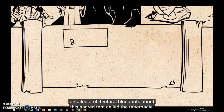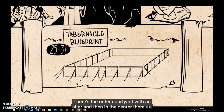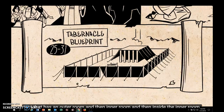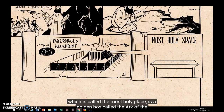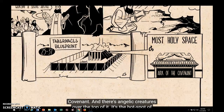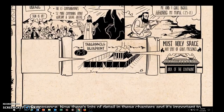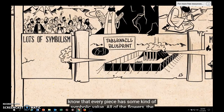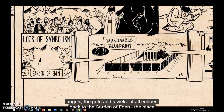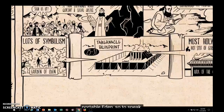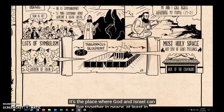What follows are seven chapters of detailed architectural blueprints about a sacred tent called the tabernacle. There's an outer courtyard with an altar, and in the center a tent with an outer room and an inner room. Inside the inner room — the most holy space — is a golden box called the Ark of the Covenant, with angelic creatures over the top. Every piece has symbolic value: the flowers, the angels, the gold, and the jewels all echo back to the Garden of Eden, the place where God and humans lived together in intimacy. The tabernacle is like a portable Eden — the place where God and Israel can live together in peace.